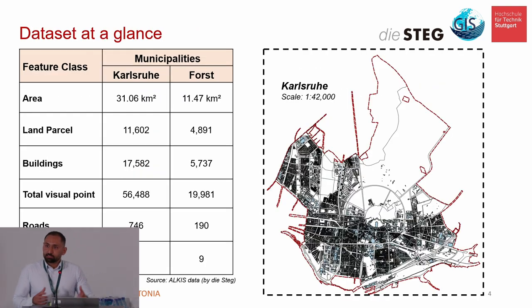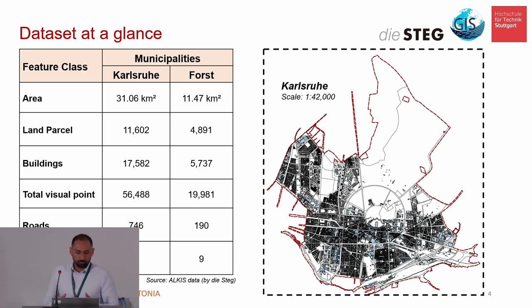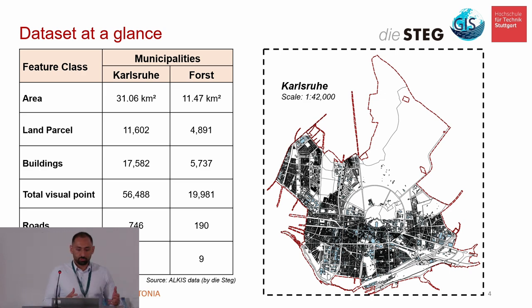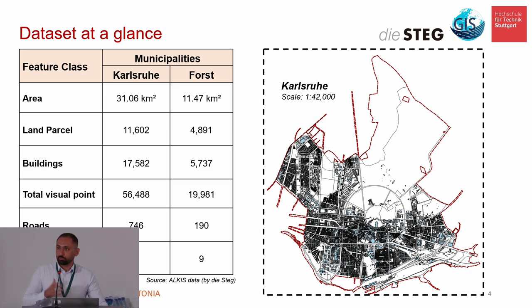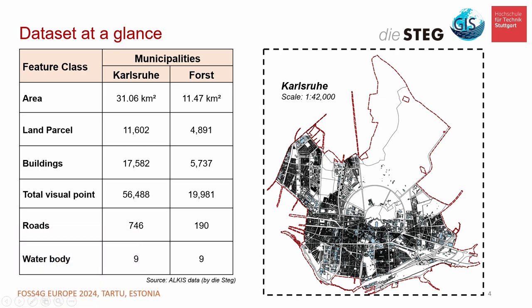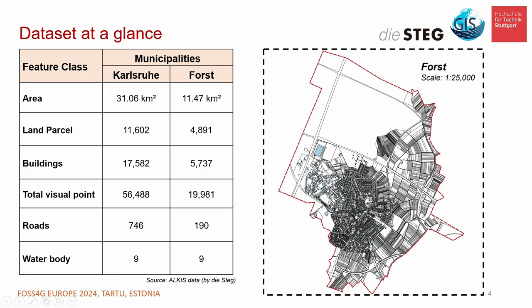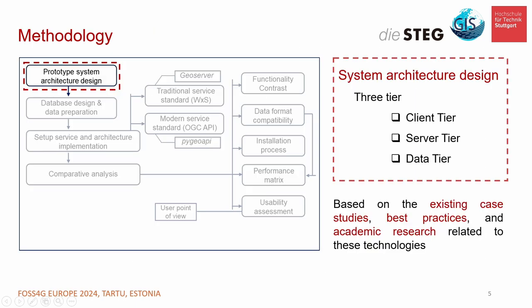Here are our datasets. We are based in Germany, with two cities — two municipalities: Karlsruhe and Forst. The feature classes are: area, land parcel, building, roads, and water body. This is the Karlsruhe dataset and this is the Forst dataset.